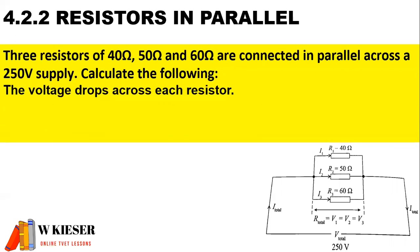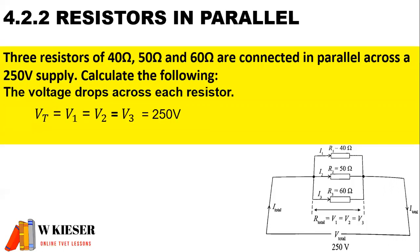The volt drops across each resistor — this question can be a little bit misleading, because this is a parallel branch and voltage remains the same across the parallel branch. Therefore, the supply voltage will be the same as V1, V2, and V3, which is 250 volts.